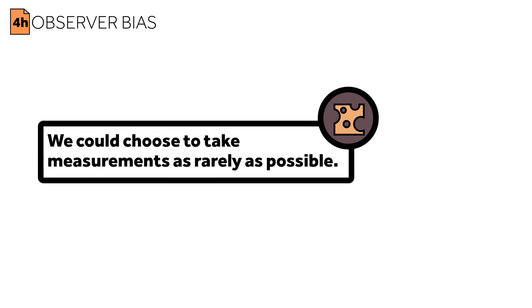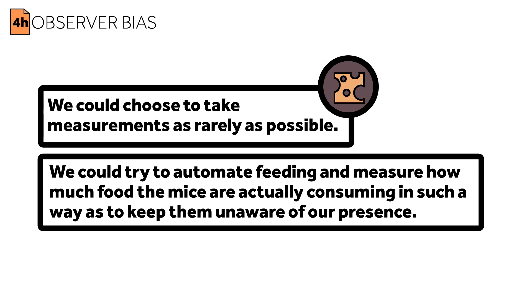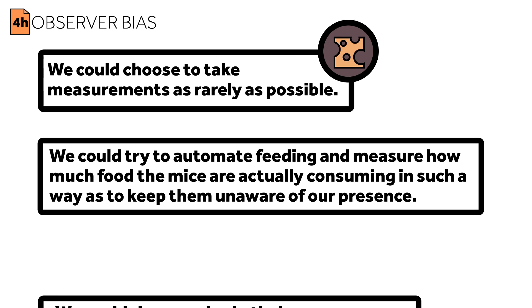These problems can be overcome. Think of the mouse study. We could choose to take measurements as rarely as possible — for instance, if we chose to measure weight only at the beginning and the end of the study, then our handling of the mice would be kept to a minimum, and so would its unwanted effects. We could also try to automate feeding and measure how much food the mice are consuming in such a way as to keep them unaware of our presence. If we're feeling especially sophisticated, we could rig up scales in their cages so that weight could be measured without the mice even knowing it.